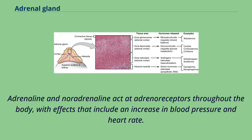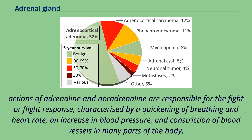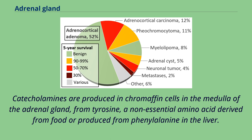Adrenaline and noradrenaline act at adrenoreceptors throughout the body, with effects that include an increase in blood pressure and heart rate. Actions of adrenaline and noradrenaline are responsible for the fight-or-flight response, characterized by a quickening of breathing and heart rate, an increase in blood pressure, and constriction of blood vessels in many parts of the body. Catecholamins are produced in chromaffin cells in the medulla of the adrenal gland from tyrosine, a non-essential amino acid derived from food or produced from phenylalanine in the liver.